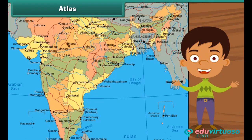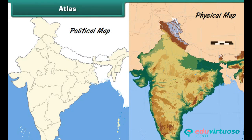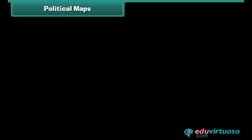Maps are of two types: political and physical. A political map is a map that shows lines defining countries, states and territories. Its purpose is to show the political borders. For example, the world political map shows all the countries of the world with their capitals.